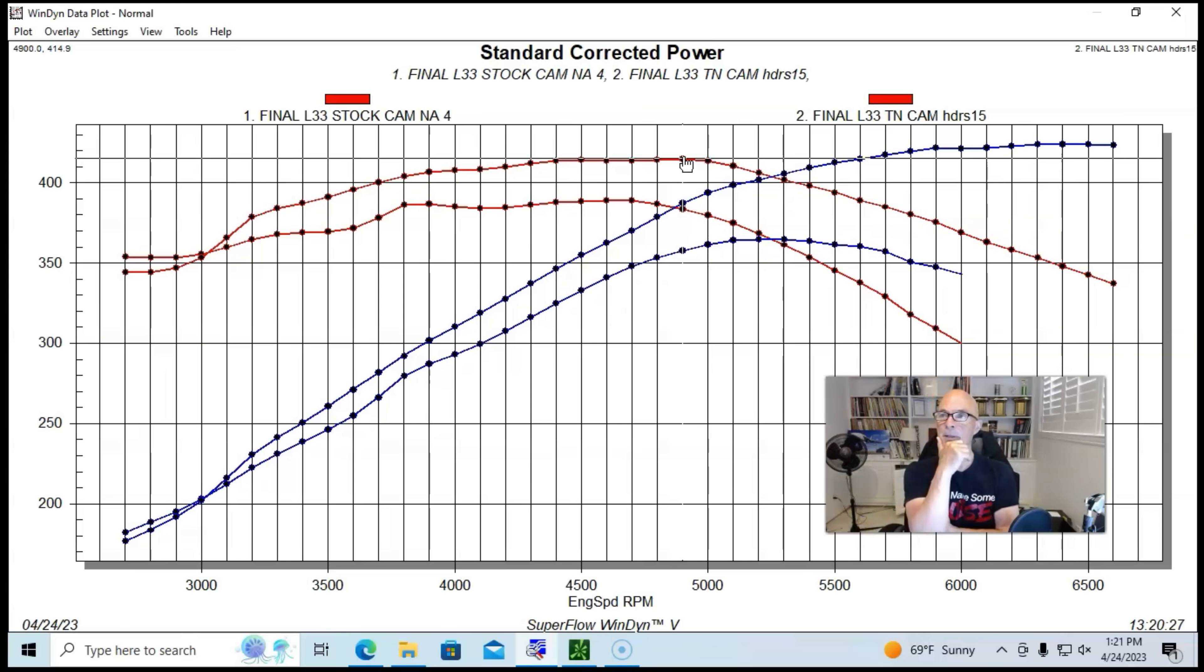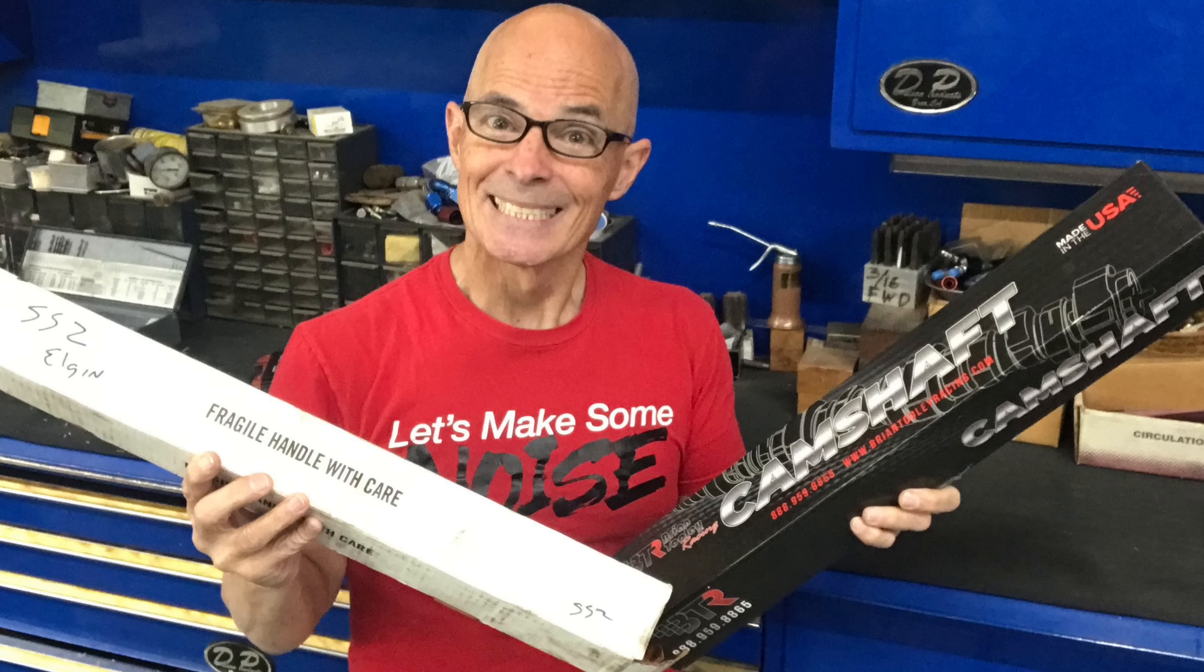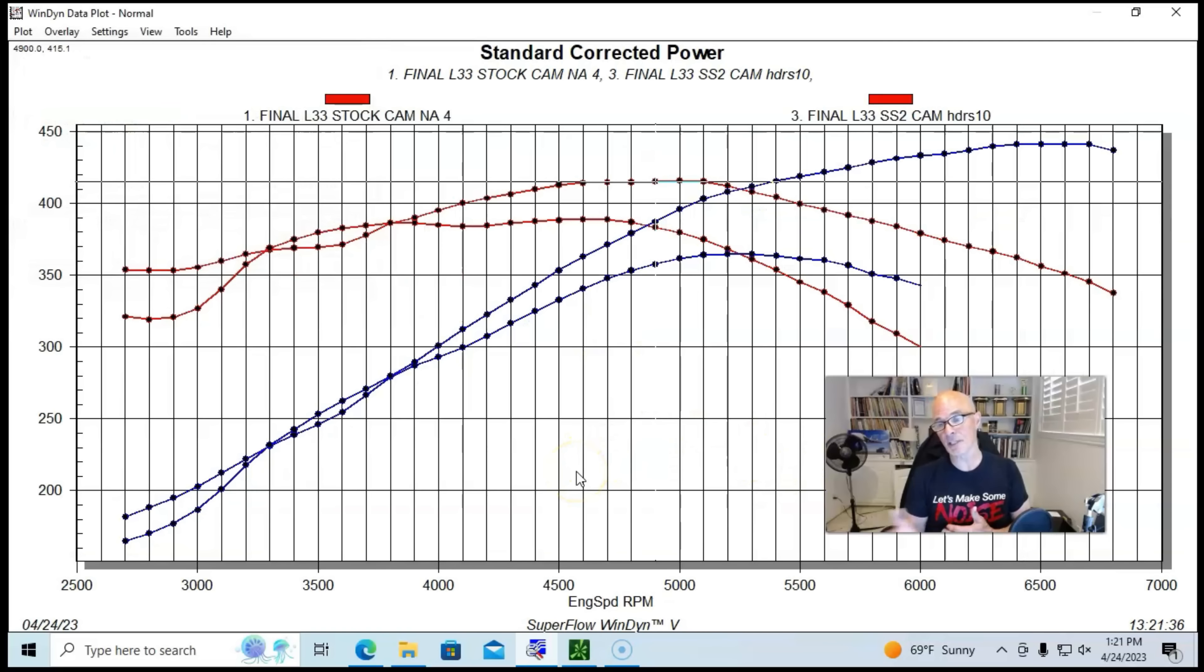So you're thinking, okay, great, but now what it would do on a six liter, but before we can get there, we need to take a look at what the Sloppy Stage 2 cam does. So we're going to get rid of our Truck Norse Cam. We're going to bring in the Sloppy Stage 2 cam, and like the Truck Norse, the Sloppy Stage 2 added much more power than the stock cam.